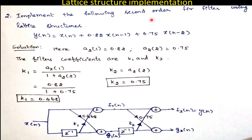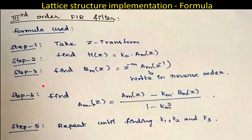Since this is a second order filter, draw two first order filter structures. Mark the first crisscross multiplier with k1 = 0.468 and the second with k2 = 0.75. The input is x(n) and the output is y(n), with two delay elements in the bottom line. When the order of the filter increases to third order or higher, calculation of k1, k2, k3 becomes more complex, and a different method must be followed.